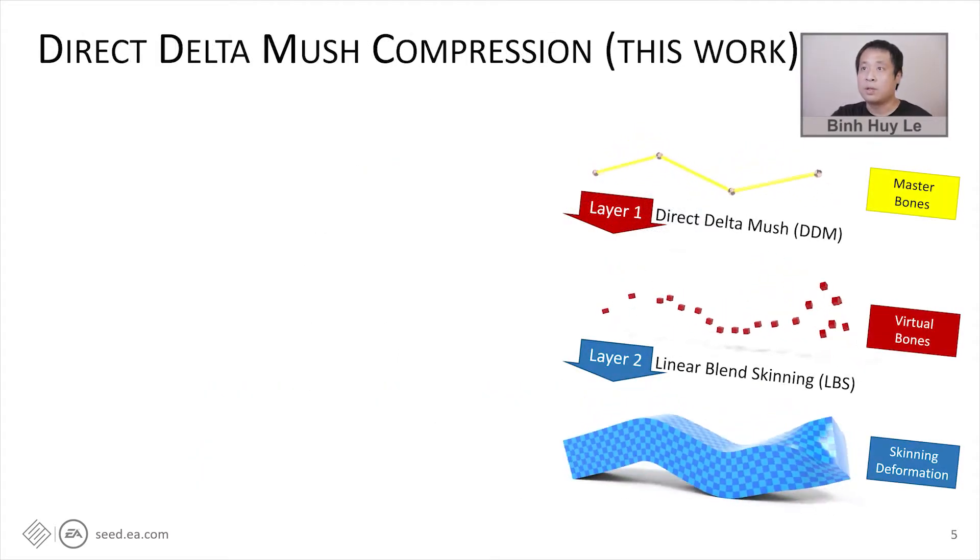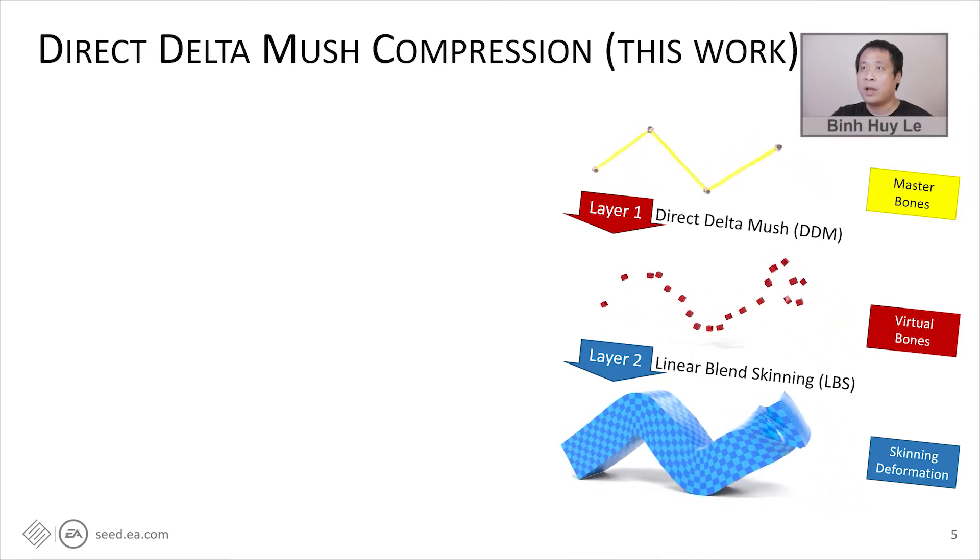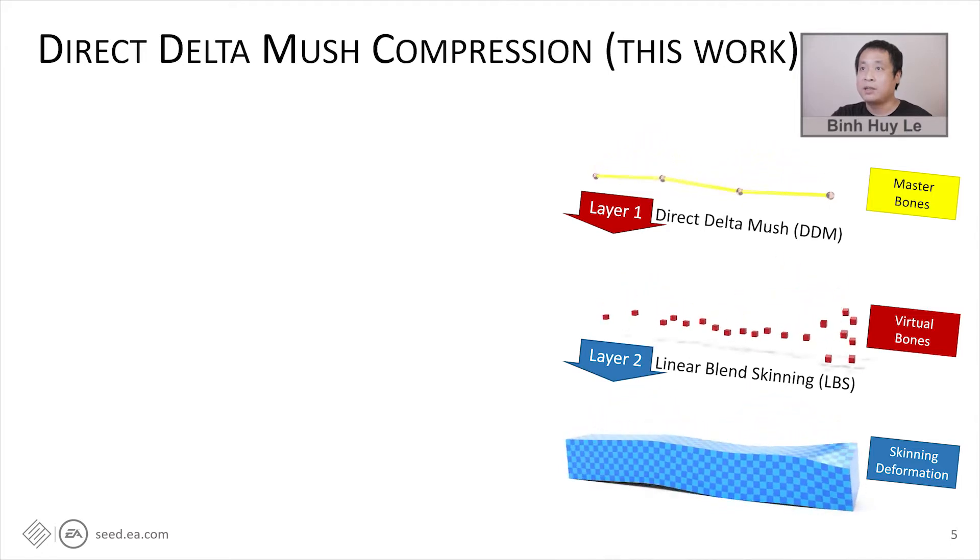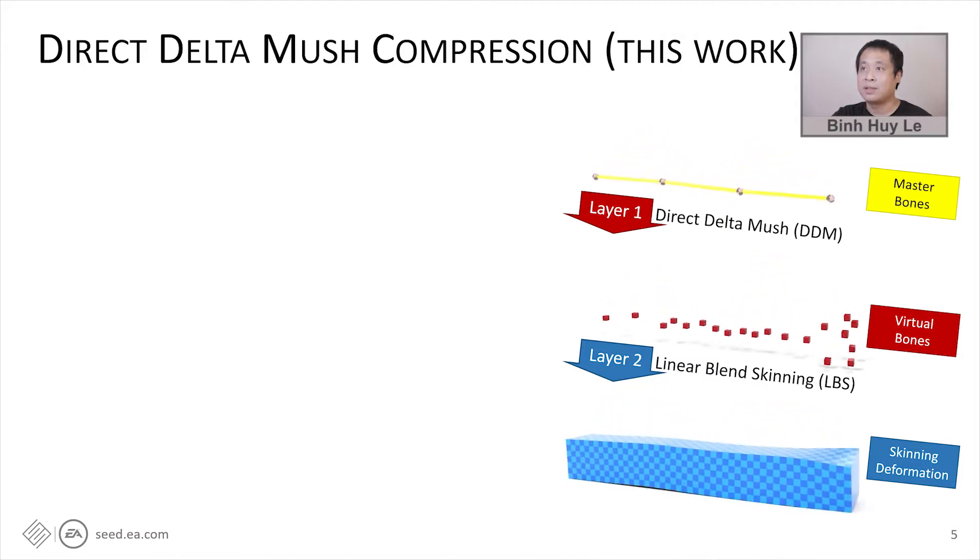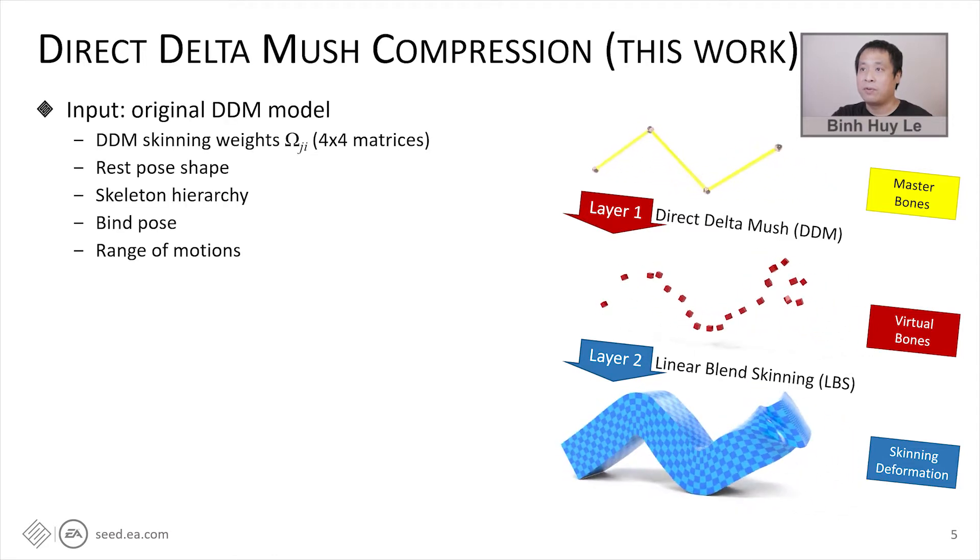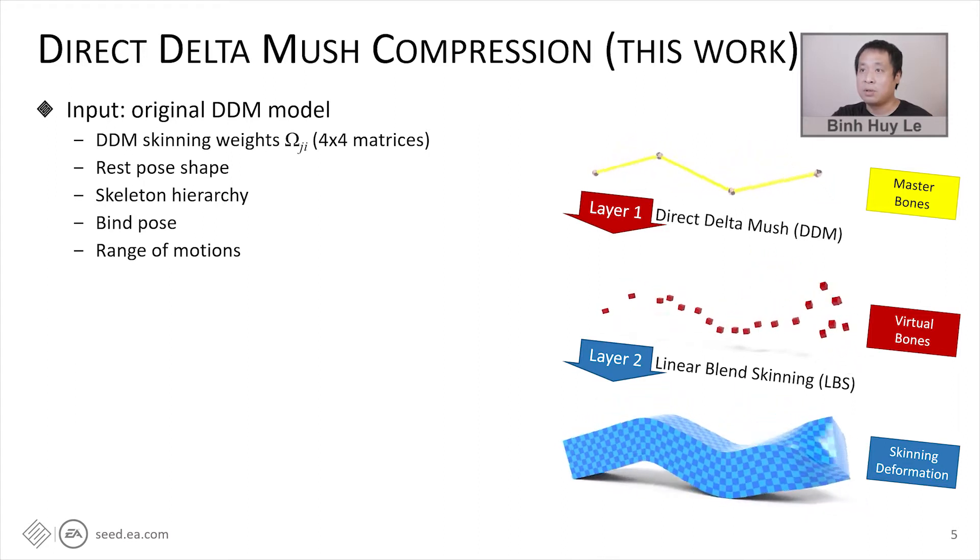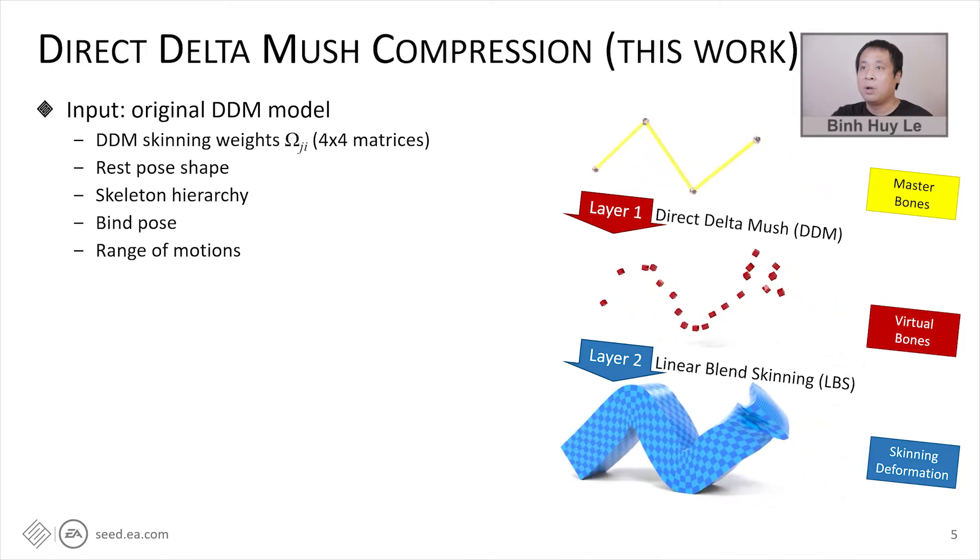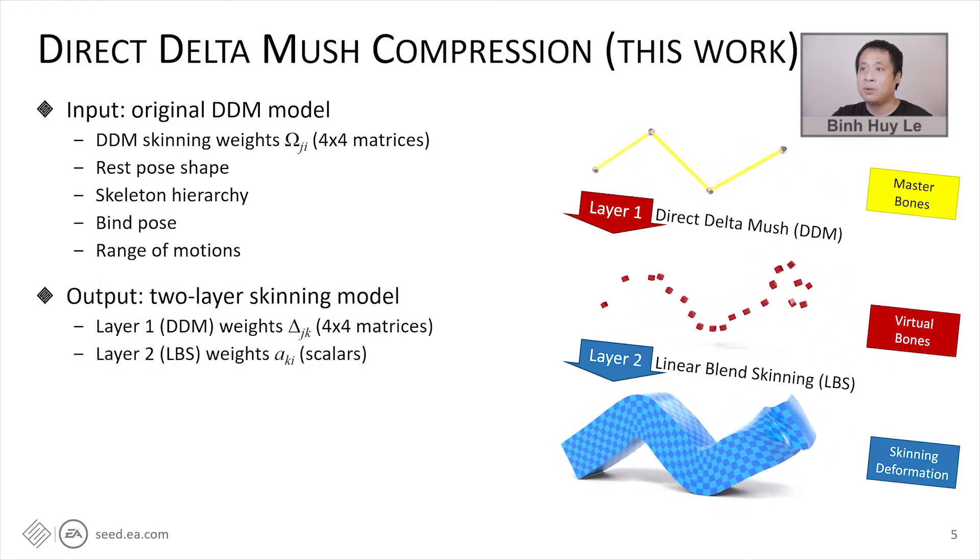In this work, we also designed a two-layer model as shown on the right. The first layer is a small, direct delta mush skinning model, and the second layer is a large linear blend skinning model. They are connected by a set of vertebrals, which passes the transformations from the first to the second layer. Our two-layer model is automatically computed from the original DDM model, which includes skinning weights, rest pose, skeleton hierarchy, and bind pose. We can also take the range of motions of every bone into consideration. And the output includes the weights of the two layers.